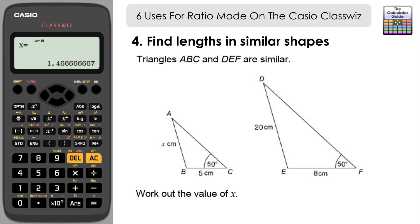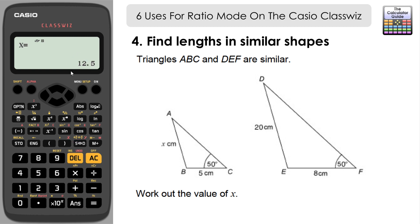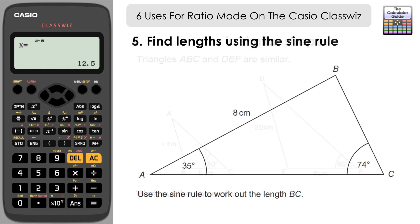The fourth use is working out sides of similar shapes. Triangles ABC and DEF are similar, with DEF being an enlargement of ABC. We need to find x, the side on the smaller shape equivalent to the 20 cm side on the enlarged shape. The ratio of corresponding sides is 5 to 8, so input 5 and 8 on the left, x as unknown and 20 on the right. Press equals and convert to decimal: side AB is 12.5 centimetres.